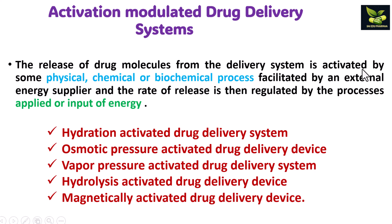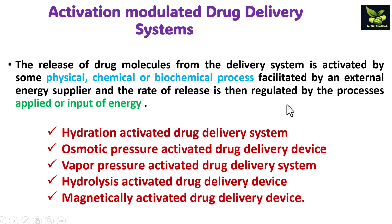The next type is activation modulated drug release system. As the name suggests, drug release is activated by physical, chemical, or biochemical processes. Due to this external energy supply, the rate of release is regulated by the process applied or input of energy. Activation can be achieved by hydration, osmotic pressure, vapor pressure, hydrolysis, or magnetic means.